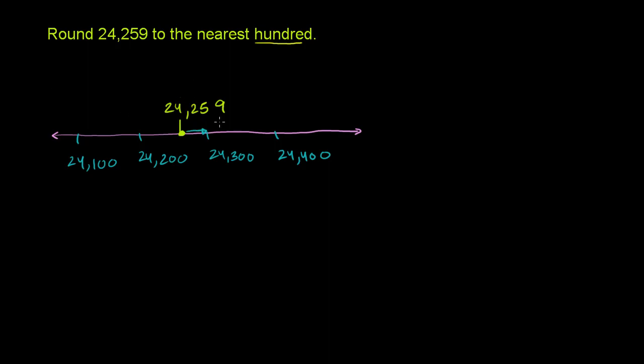So if you round to the nearest hundred, the answer literally is 24,300. Now that's kind of the conceptual understanding of why it's even called the nearest hundred. The nearest hundred is 24,300.